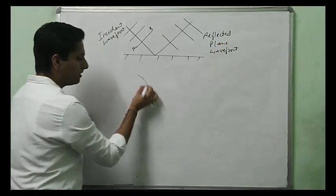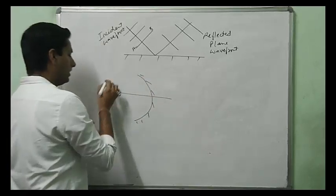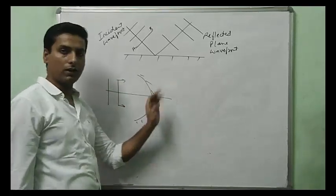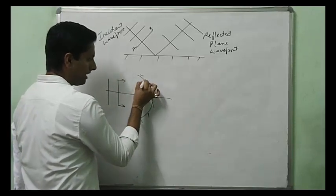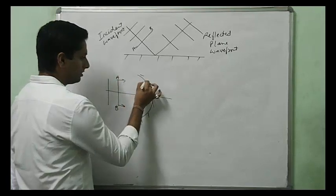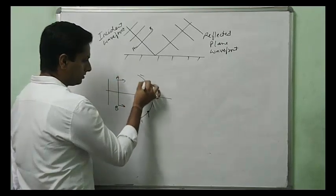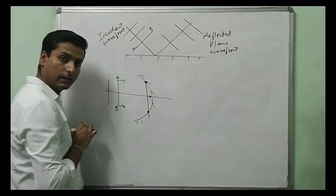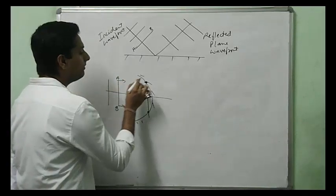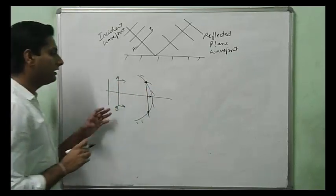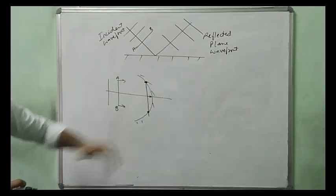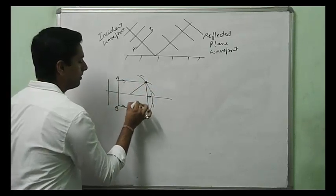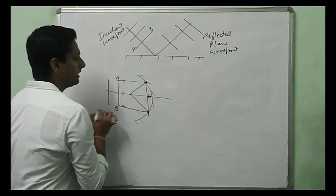For a concave mirror with an incident plane wavefront: the corners A and B strike the mirror surface first, while the middle portion continues moving forward and strikes last. Rays traveling parallel to the principal axis converge to the focus after reflection. Due to the variation in striking time, the wavefront bends, and the reflected wavefront is a curved concave wavefront converging toward the focus.